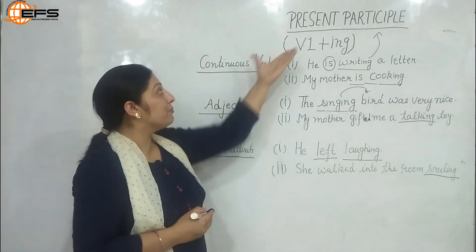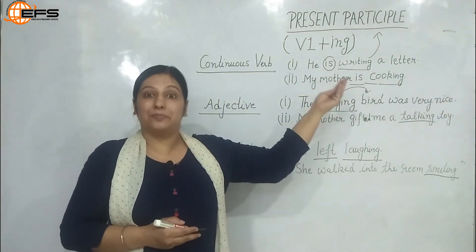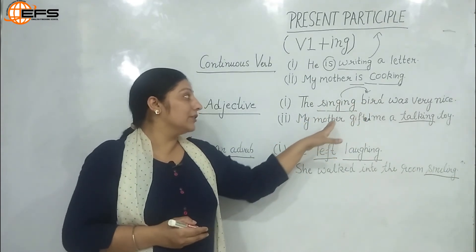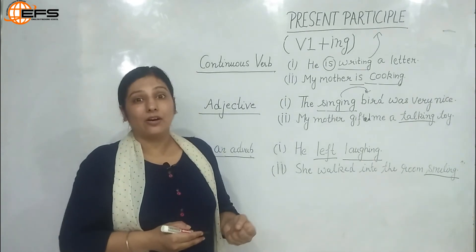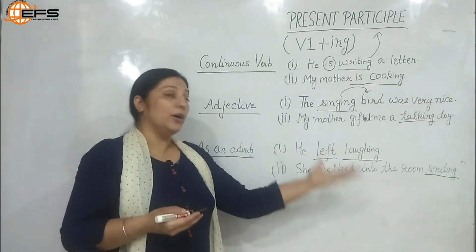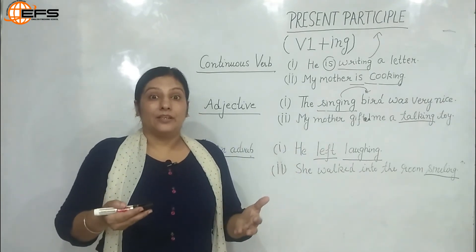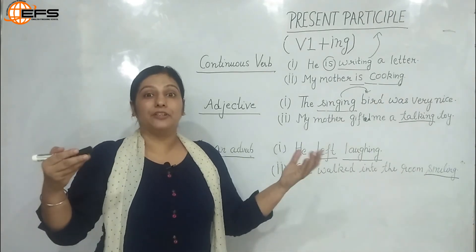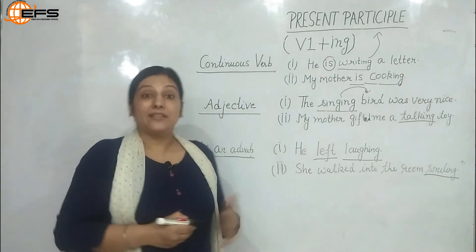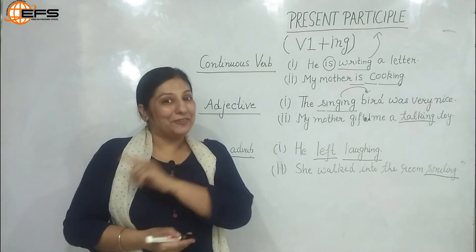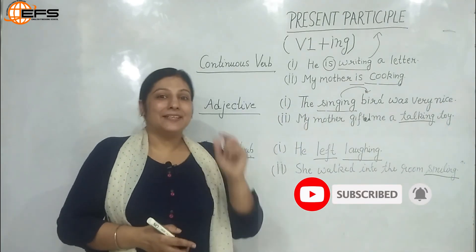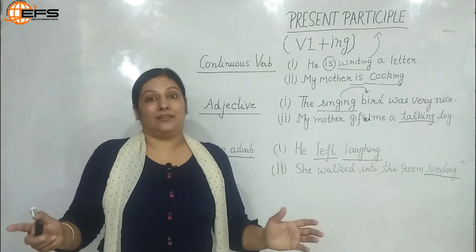So to summarize: present participle, that is V1 + -ing, plays three roles — as a continuous verb in present, past, and future continuous tenses; as an adjective, like 'singing bird', 'talking toy', 'dancing doll', 'crying baby'; and as an adverb, like 'she left smiling', 'she came laughing', 'she walked out laughing'. If you liked the video, please hit the like button, subscribe to our channel, and press the bell icon for updates. Thank you for watching — have a wonderful day.